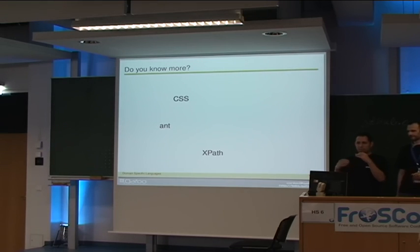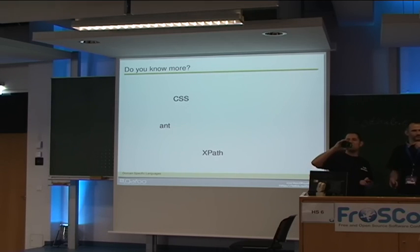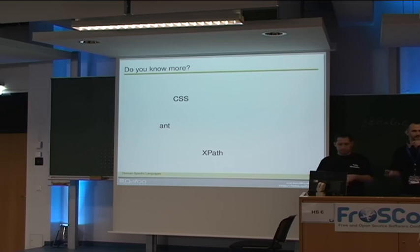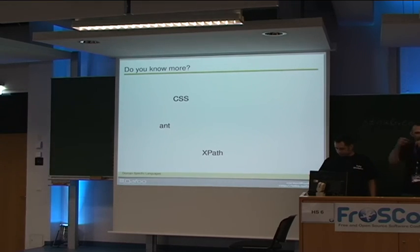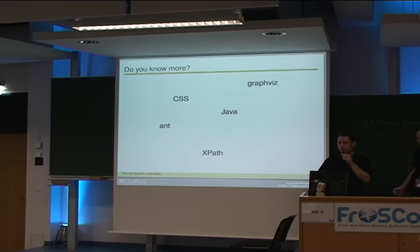Configuring your program in a complex way can be a DSL. The difference to Markdown would be that with Markdown you structure and create the whole document, but with CSS you just format the HTML — which makes CSS a DSL, but Markdown not, because it's a full package. We have GraphVis, just to name some more. We have Java — any Java developers here? Only one.